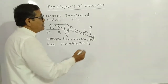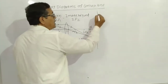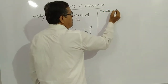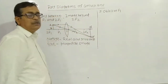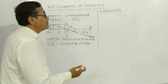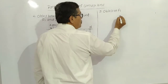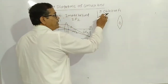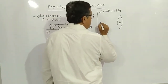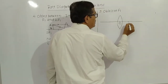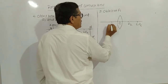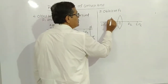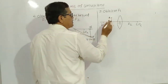That is diagram number four. Next, what is diagram number five? In diagram number five, the object is at focus — that is, object at F1. When the object is at focus, the image is at infinity. We can draw the diagram here. That is a Convex Lens with optical center O. AB is the object placed at focus F1.